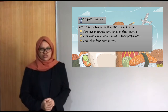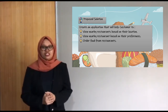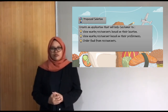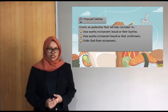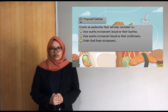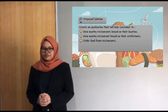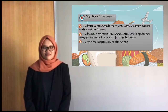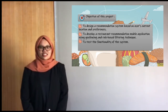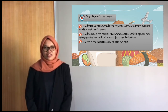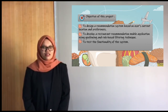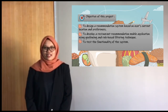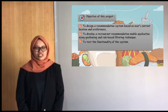So what are the solutions to fix these problems? The proposed solution is to create an application that will help customers view nearby restaurants based on their interest and current location, and also allow customers to order food using the application. The objectives of this project are: to design a recommendation system based on users' current location and preferences such as cuisine, restaurant environment, and budget; to develop a restaurant recommendation mobile application using geofencing and a rule-based filtering technique; and last but not least, to test the functionality of the system.